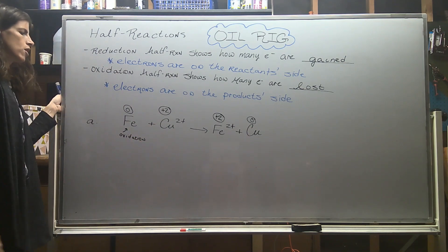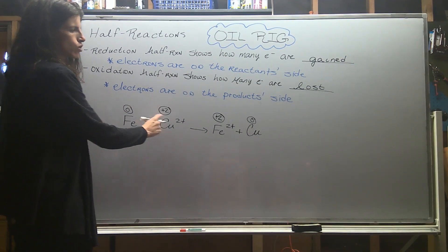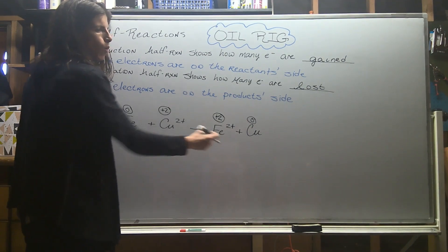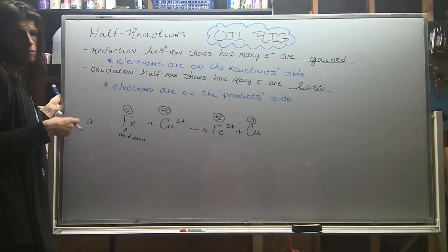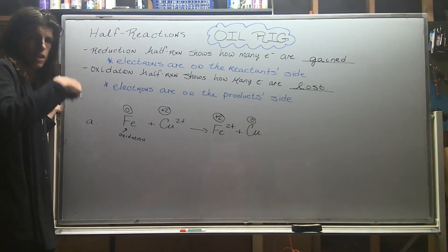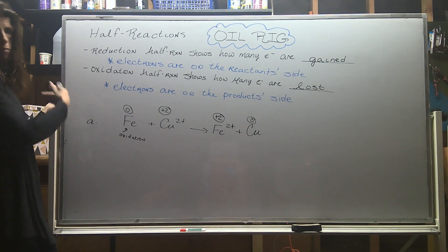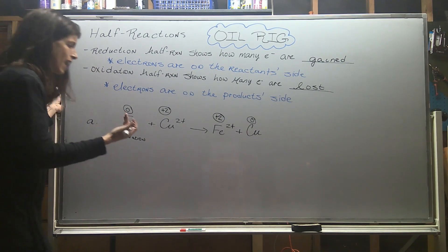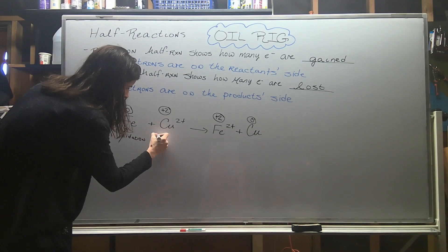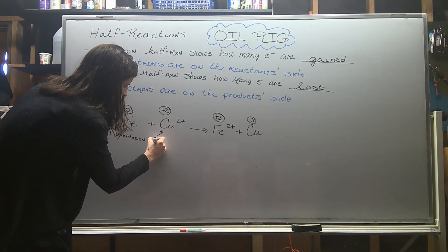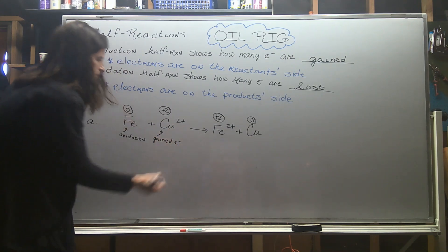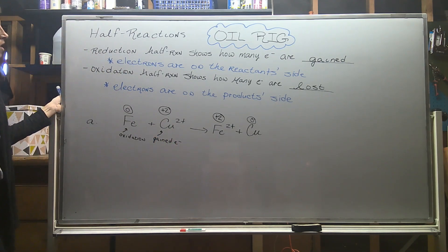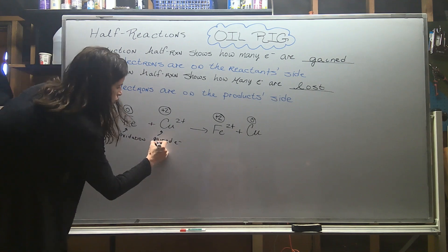Copper went from plus two to zero, which means it must have gained electrons — it moved to the left on the number line, going down in value. Gaining electrons means copper underwent reduction.